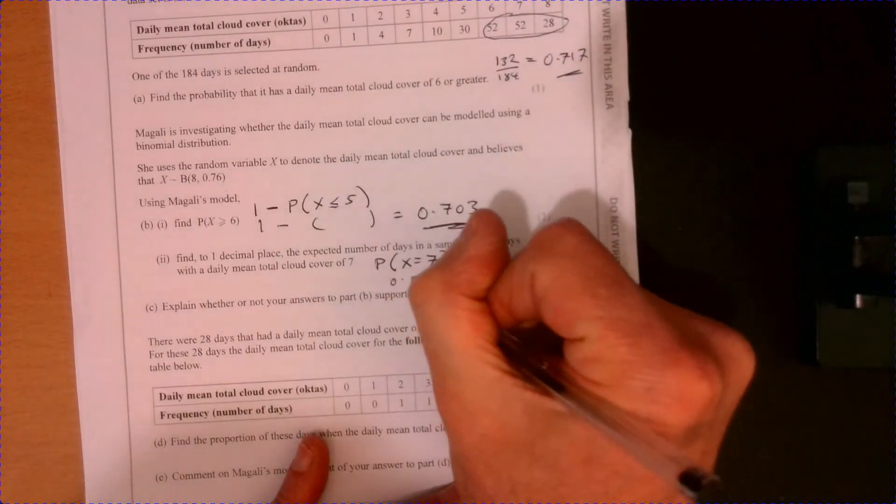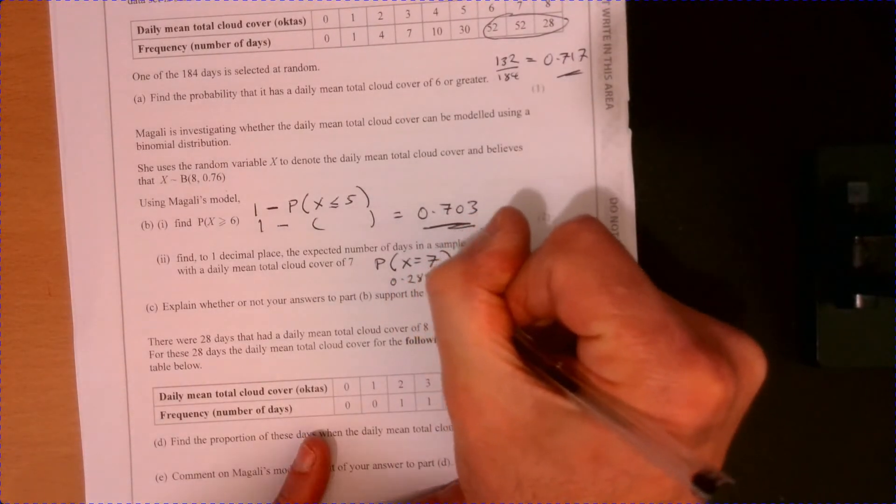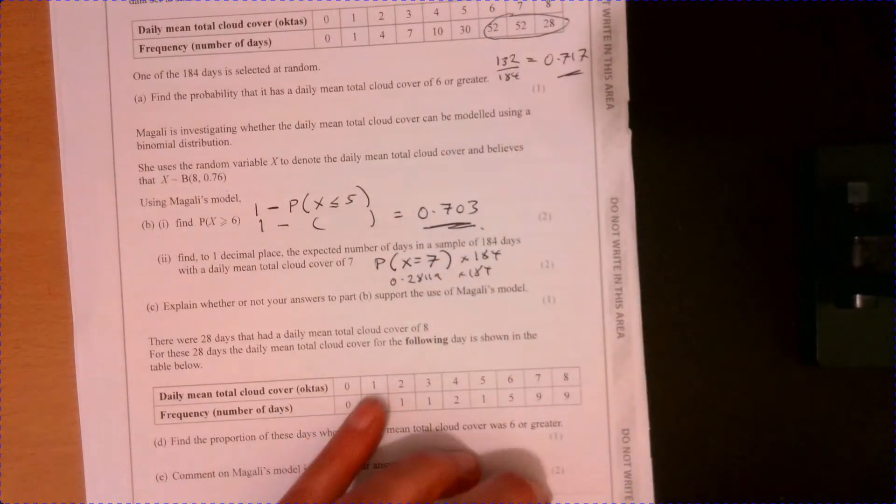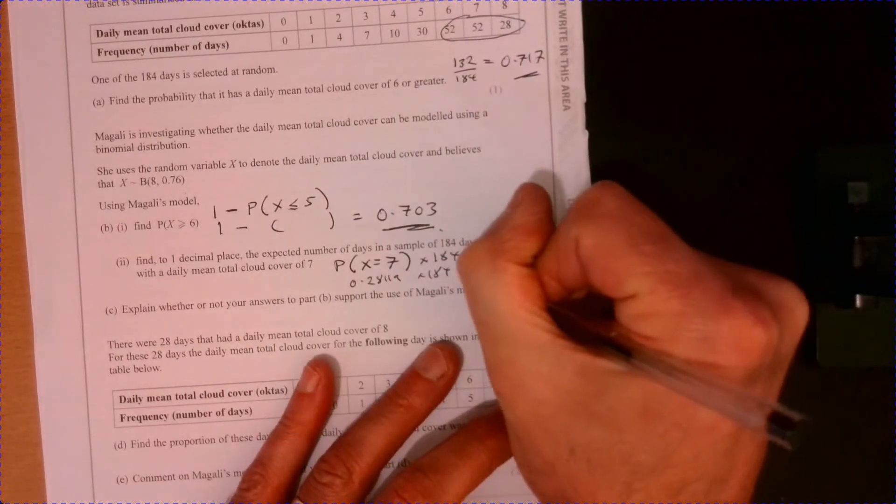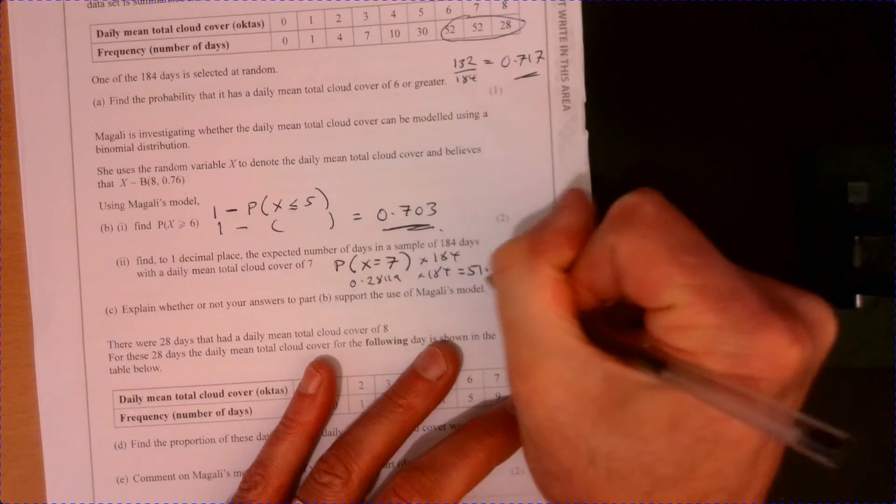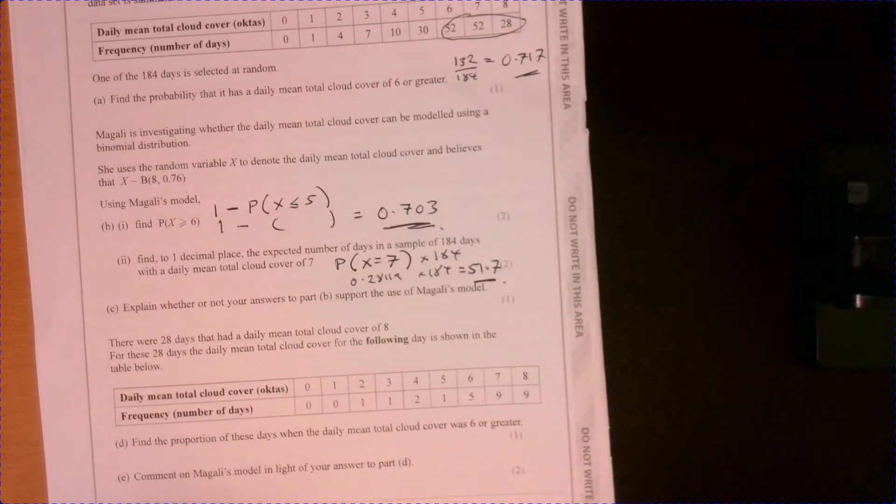I'm not using the cumulative. I'm just working out the probability. So I'm going to put 7 in, I'll put the other information in, and then we can work that out from there. So the actual figure comes out to be like 0.28119 times that by 184, and we end up getting 51.7.